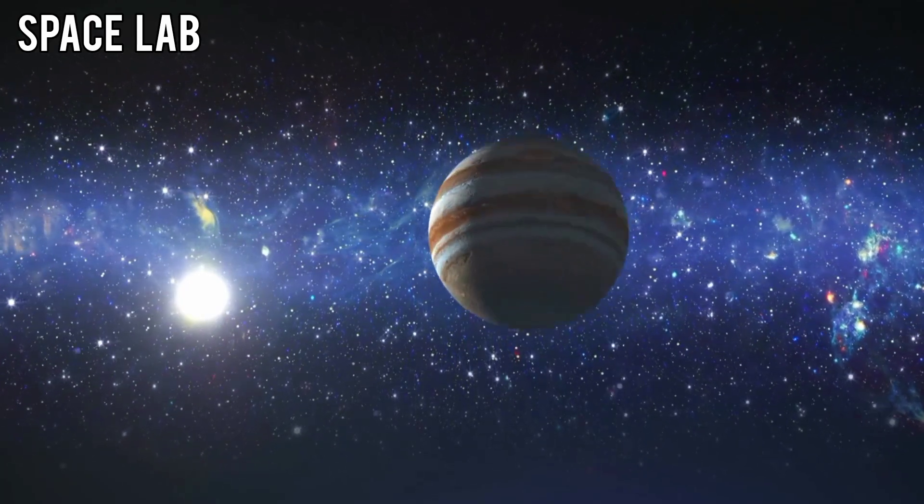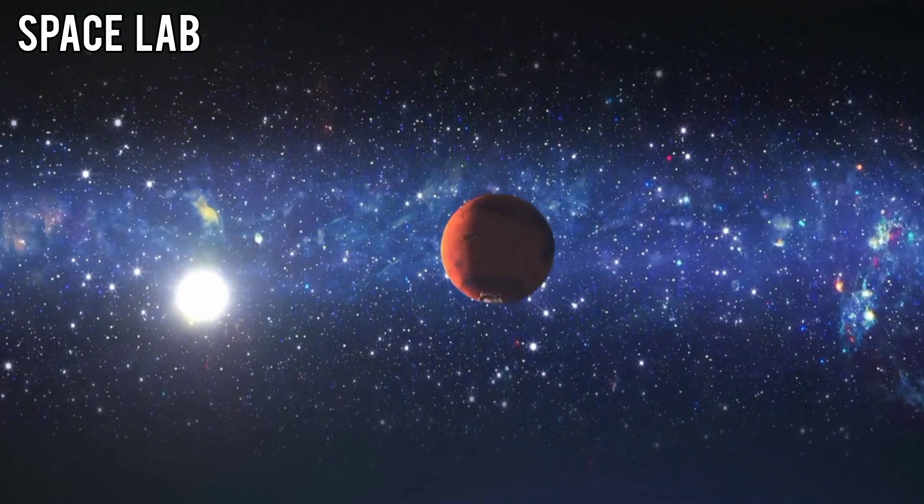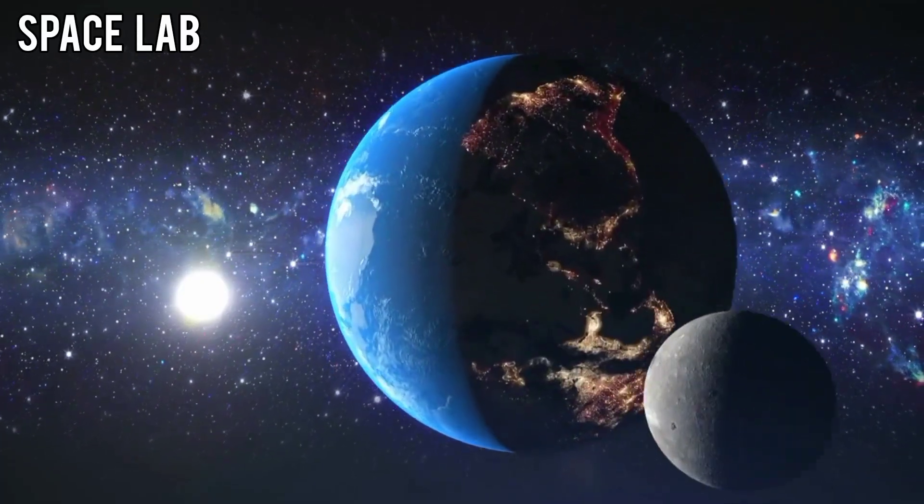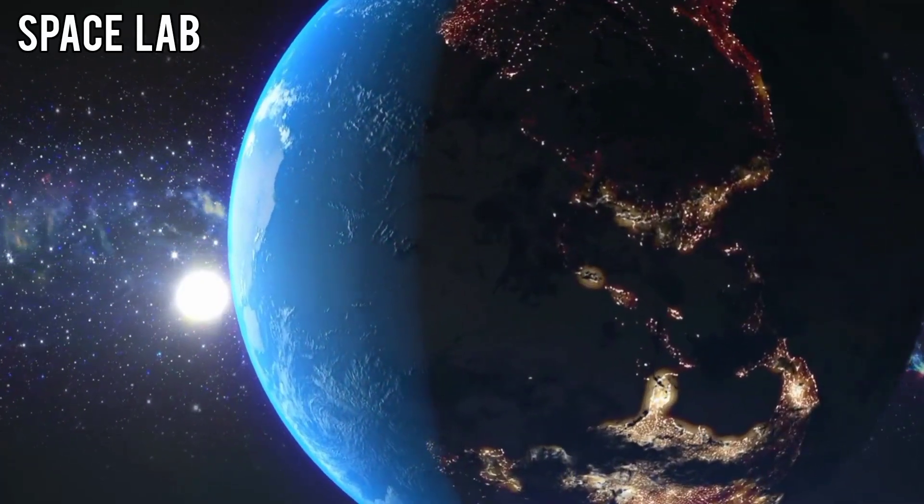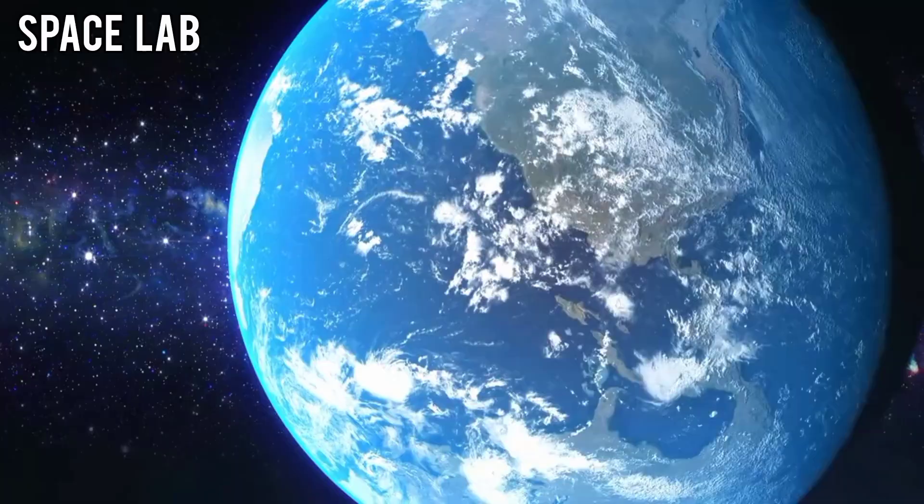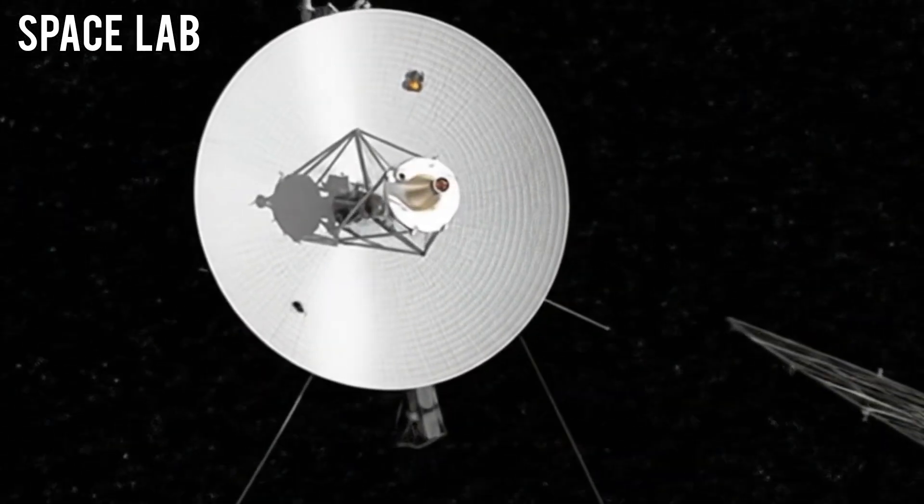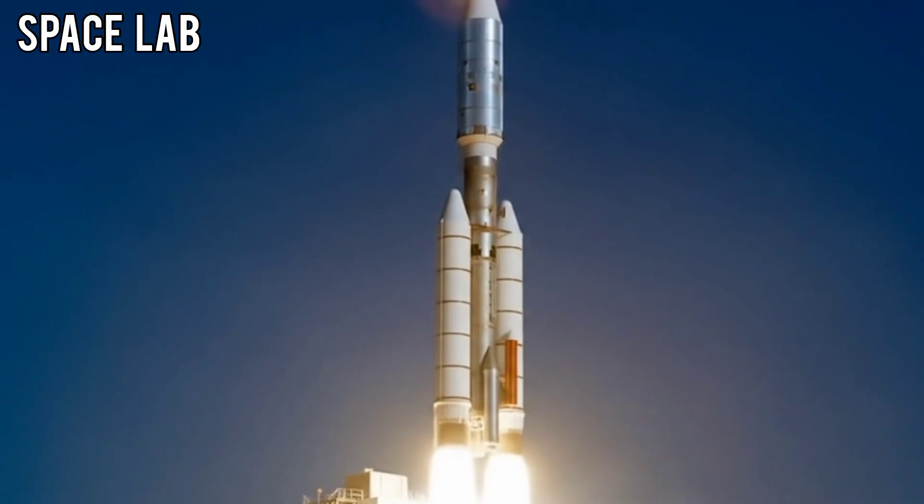In the cold emptiness of interstellar space, almost 12 billion miles away, a faint signal returned to Earth. At first, it looked routine, just another weak transmission from Voyager 2, humanity's messenger, launched in 1977.